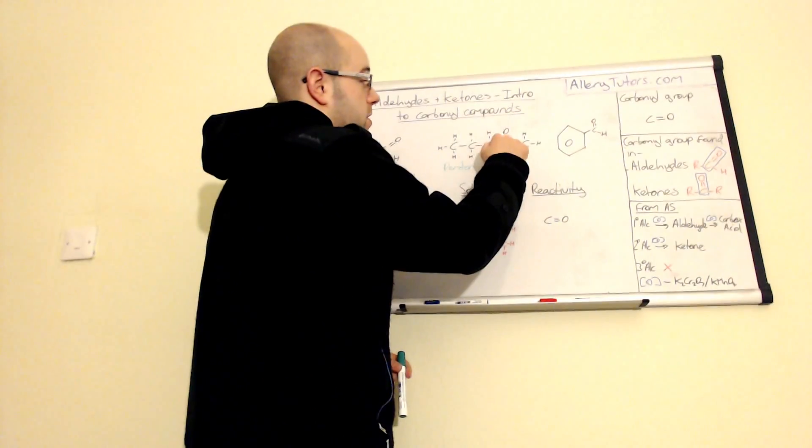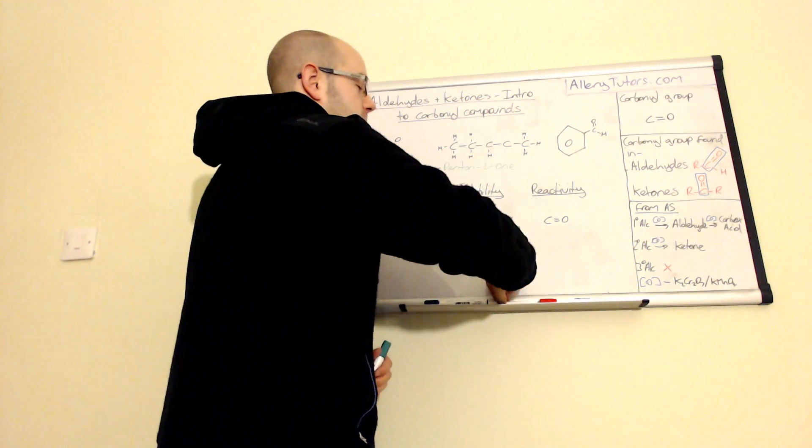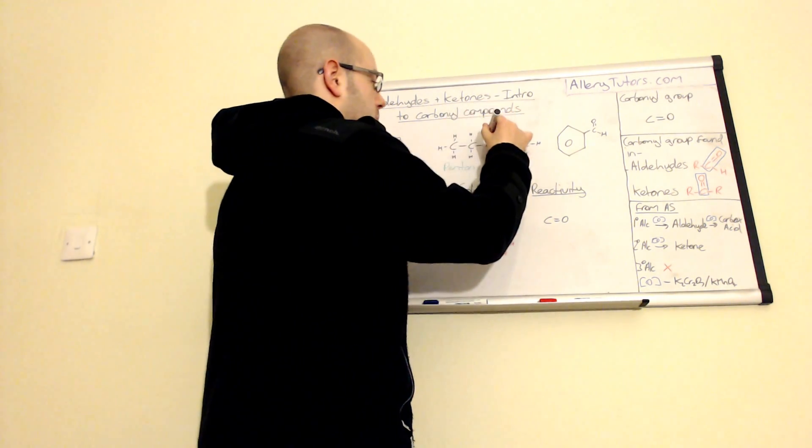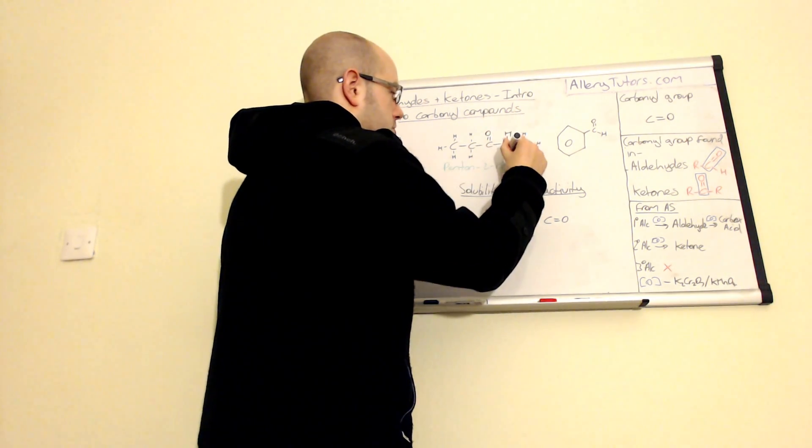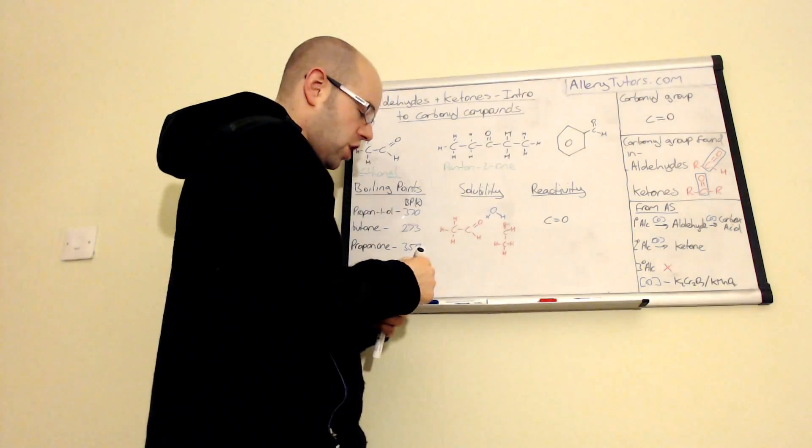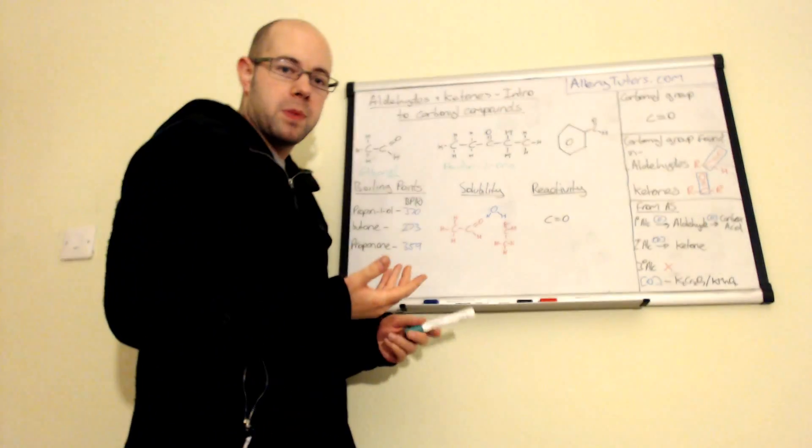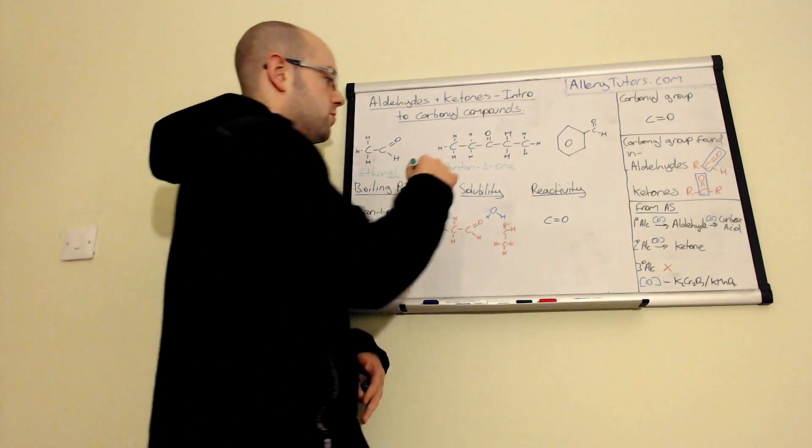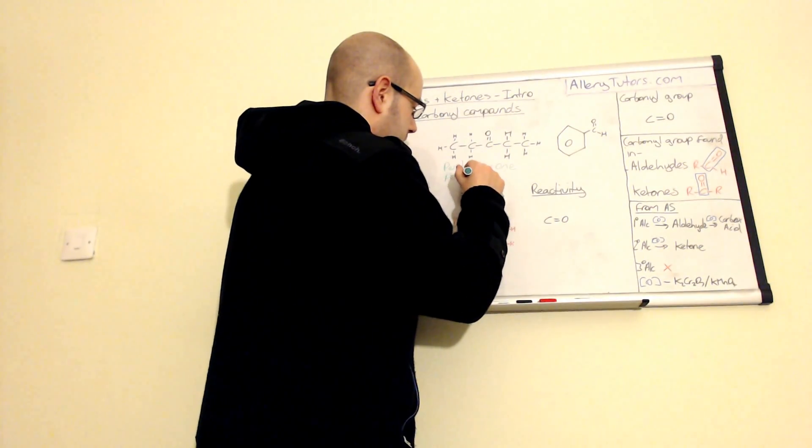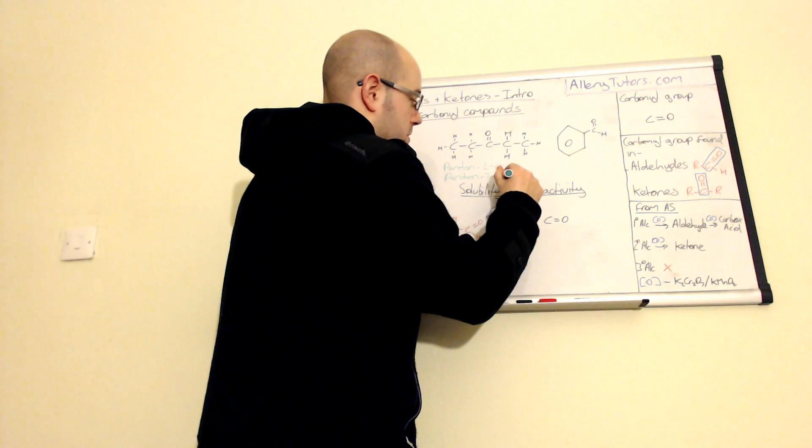You can have a different combination where sometimes that carbonyl group might be in the middle carbon. We'll put our hydrogens there. This actually changes the name of it. This is an isomer, what we call a positional isomer, because we're changing the position of the functional group. This one is still pentan because it's still got five carbons, but this time this one is pentan-3-one.